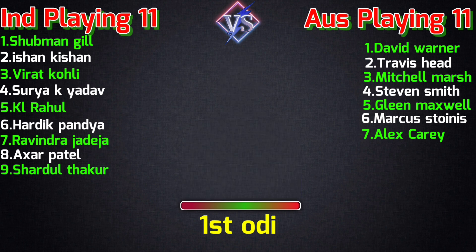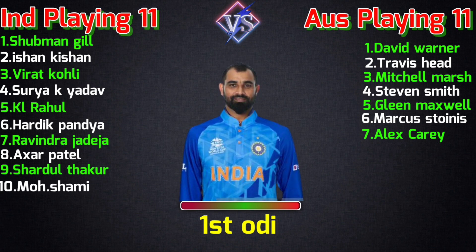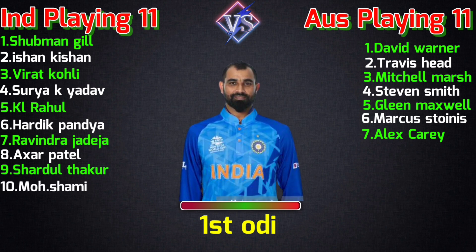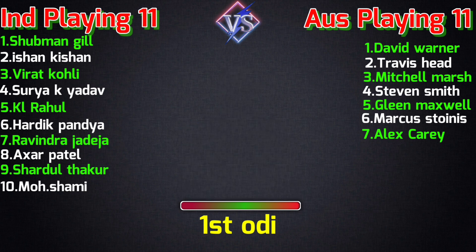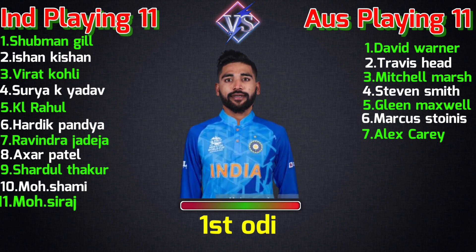Team India bowlers continued: number nine Mohammed Shami, fast bowler; number ten Mohammed Shami — number 10 Mohammed Shami, fast bowler; number 11 Mohammed Siraj, fast bowler.